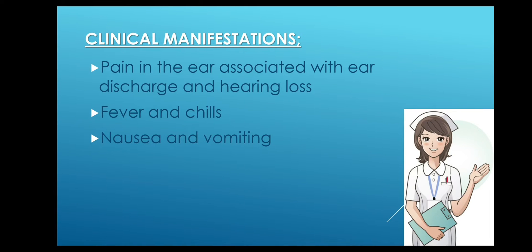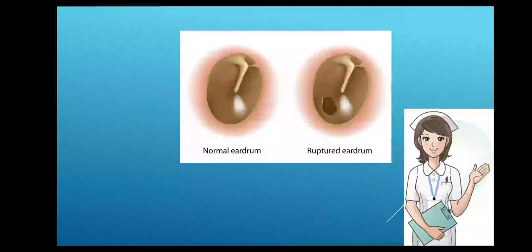The patient may experience nausea and vomiting due to equilibrium imbalance. Vertigo and tinnitus may also occur. In this picture you can see a normal eardrum and a ruptured eardrum showing a hole or tear. These are all the clinical manifestations of perforation of tympanic membrane.